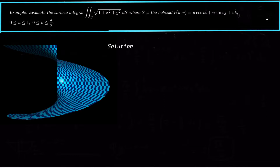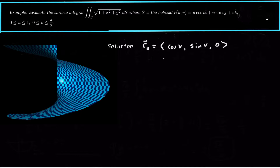Let's find the solution to this surface integral. We've already got our vector function for the parameterization, so let's go ahead and take r_u cross r_v. r_u is the derivative with respect to u: (cos v, sin v, 0). r_v is the derivative with respect to v: (−u·sin v, u·cos v, 1).